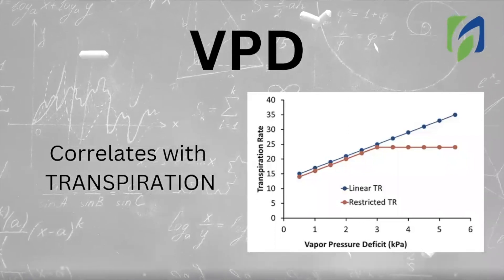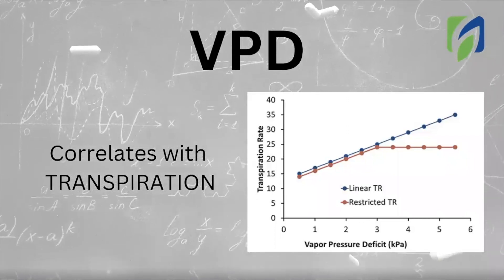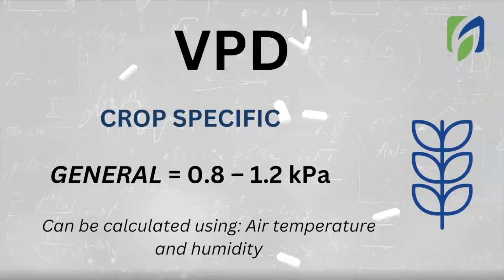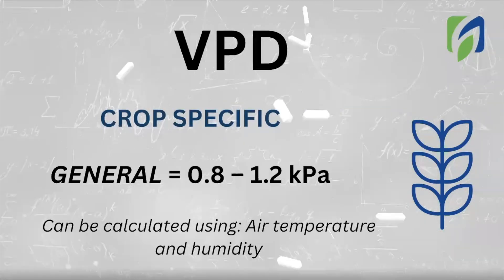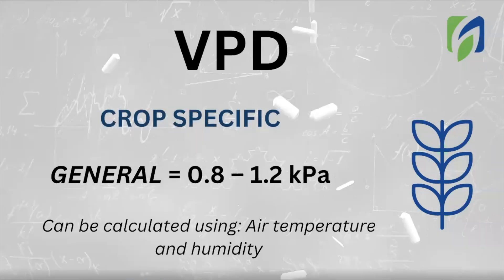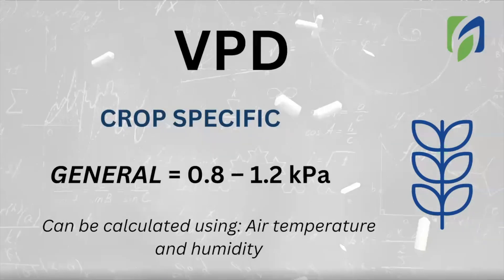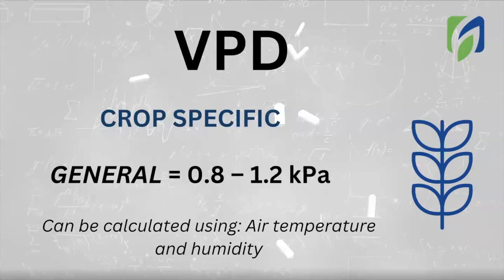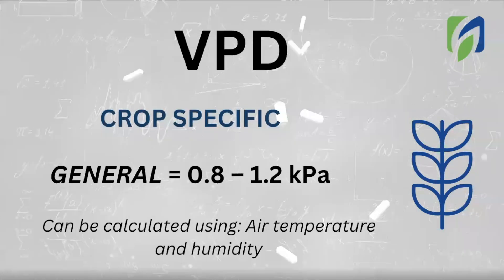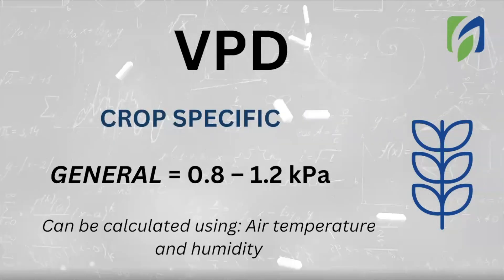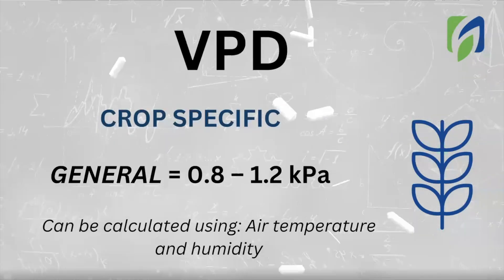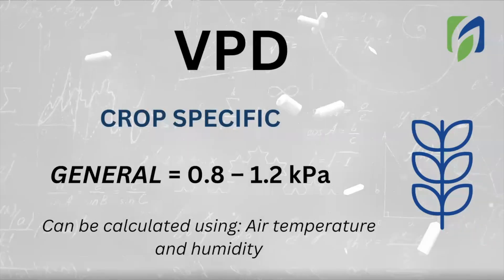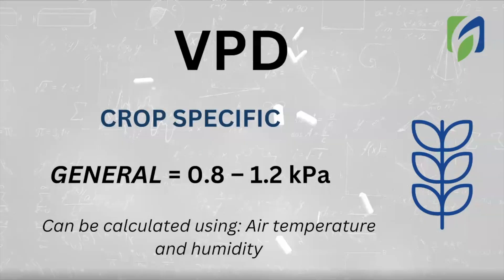Therefore, we need to play around with relative humidity and temperature to maintain plants performing well without promoting undesired conditions. We use relative humidity and air temperature to calculate VPD. And VPD is crop specific — it could even be stage of development specific, so it's very important to look for the information.